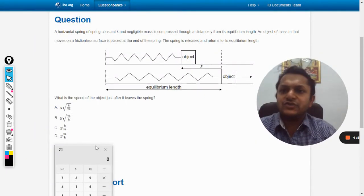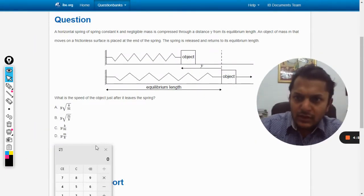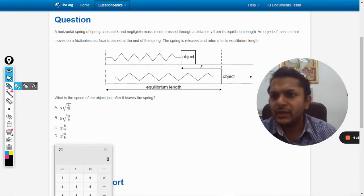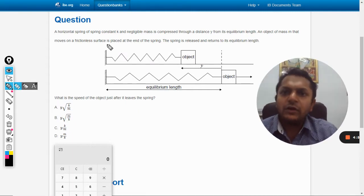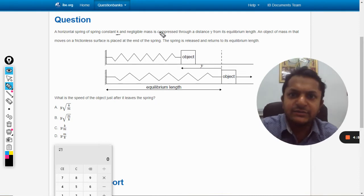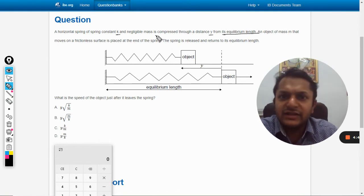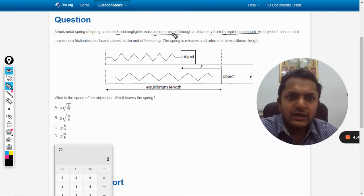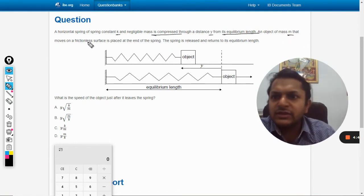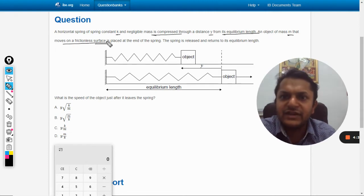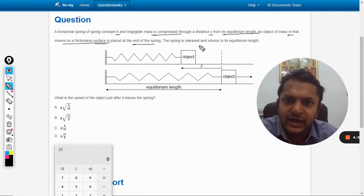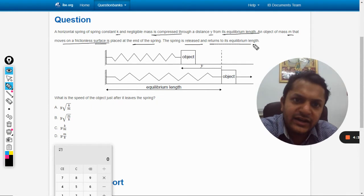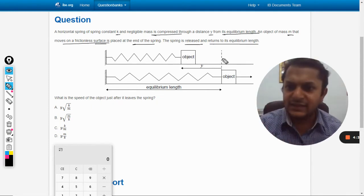Okay, so in this question, a horizontal spring of spring constant k and negligible mass is compressed through a distance y from its equilibrium length. An object of mass m that moves on a frictionless surface is placed at the end of the spring. The spring is released and returns to its equilibrium length.